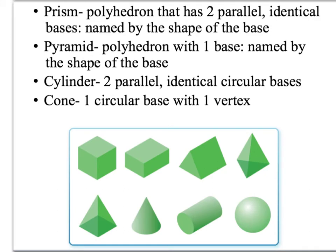All right. Some examples of three-dimensional figures. You may or may not have seen these before. We're looking at prisms. Prisms are polyhedrons that have two parallel identical bases. They're named by the shape of the base. Emma, will you circle the prisms on here, please? Oh, good job. Right there. Those three. Correct.